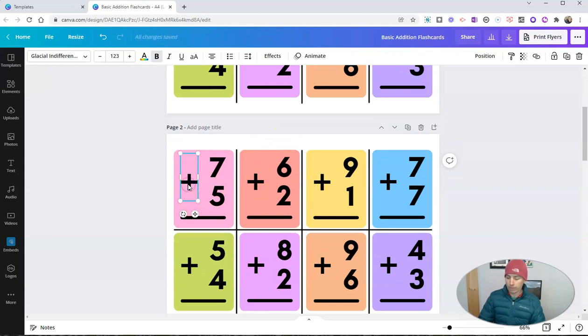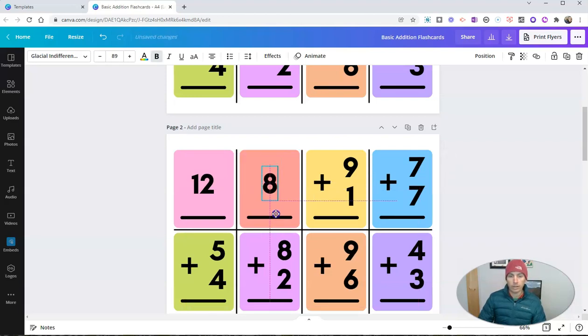And instead of having the problem again, I'm now going to put in the answer. And so there's the answer to that one, which is 12. Now I'll just click and drag to put it on the center of the flashcard. Do the same thing here. The answer is 8. And click and drag and put it in the center of the flashcard.